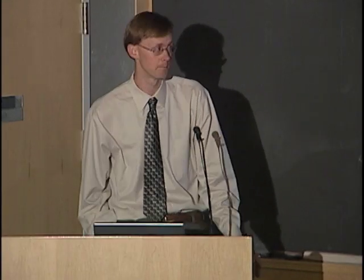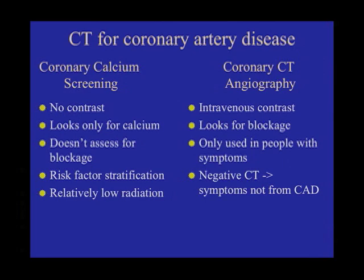We'll see where there's narrowing. This is only used in people with symptoms — I'll show you a couple of images at the very end. It's one of the most exciting new technologies in chest imaging, used with much greater frequency in people who have chest pain in particular. If you have a normal coronary CT angiography where we inject the contrast, the chances of your symptoms being caused by coronary disease are extremely low, close to zero. So we can effectively exclude coronary artery disease as a cause for chest pain and other symptoms.